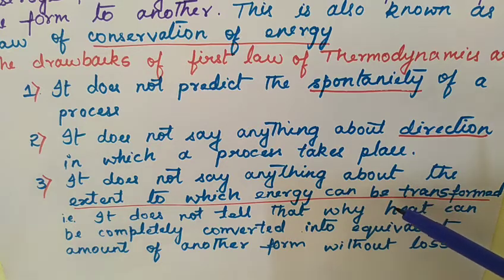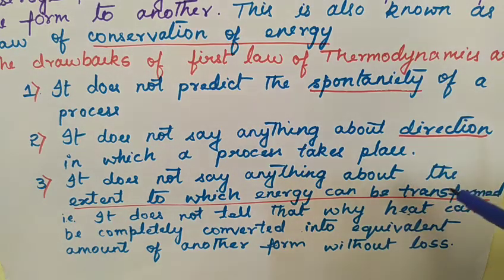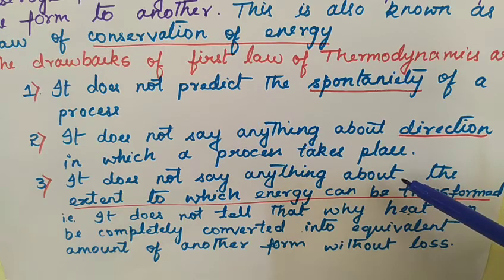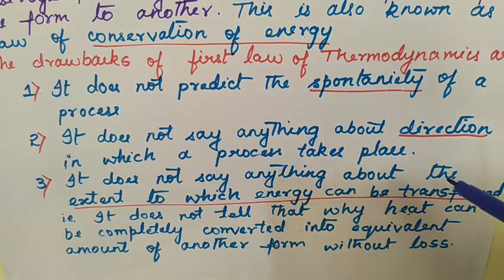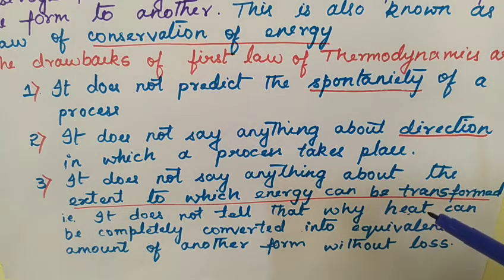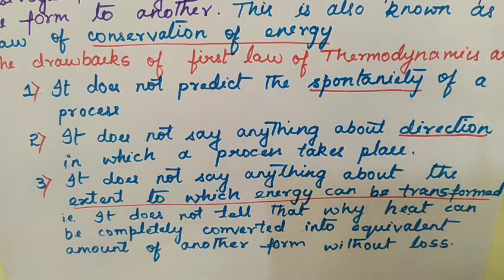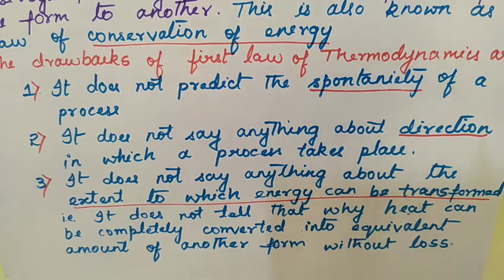Practically, it is not possible to convert one form of energy into another form 100%, because during conversion some amount of energy is always wasted. Take the example of a simple fan: the fan converts electrical energy into wind energy, but this conversion is definitely not 100% — some energy is always wasted. These are the drawbacks of the first law and this is the need for proposing the second law of thermodynamics.